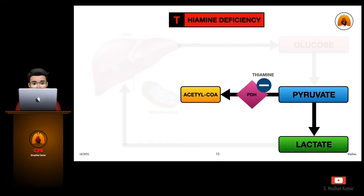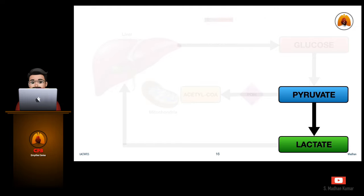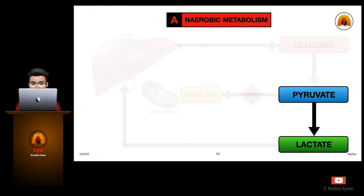Thiamine deficiency can lead to elevated lactate levels. Vitamin B1 or thiamine is needed for the re-entry of pyruvate into the Krebs cycle. Anaerobic metabolism due to gut ischemia or regional ischemia in any part of the body can also lead to elevated lactates.